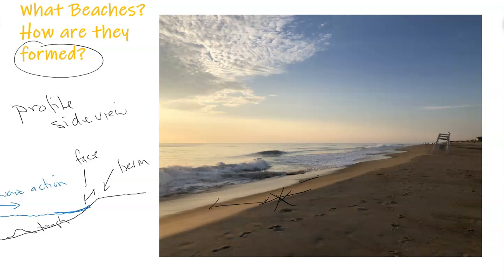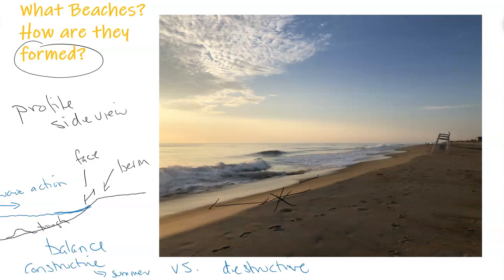The profile is created by a balance between the constructive nature of wave action — accretion, adding more sand to build up the beach, which generally happens in the summer — versus the destructive processes where more erosional activity occurs, mostly in winter. The stronger, more severe, more continuous wave action means the backwash would take away sand and create a different profile — cutting away at the sand and changing the shape, creating a new profile.